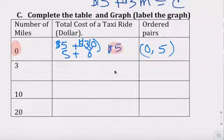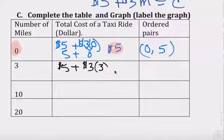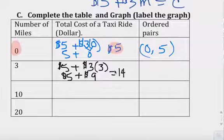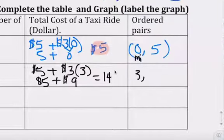Okay, if you went three miles. So $5 plus $3 times the three miles. So that's nine, nine for the miles and $5 to enter the cab. So you have a total of $14. So three miles, three miles. This is zero miles. Five dollars. Three miles for $14.